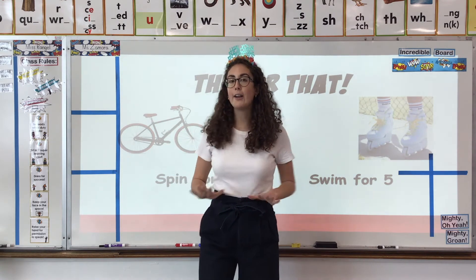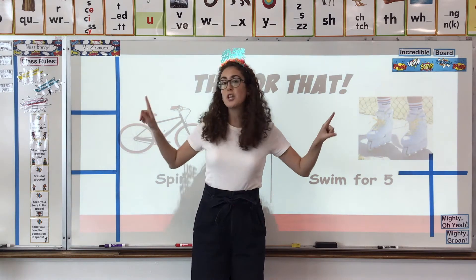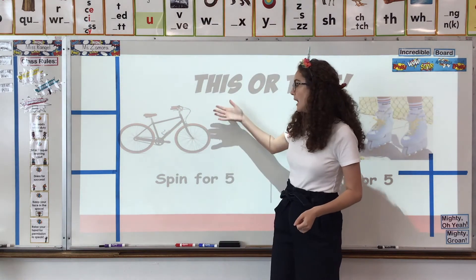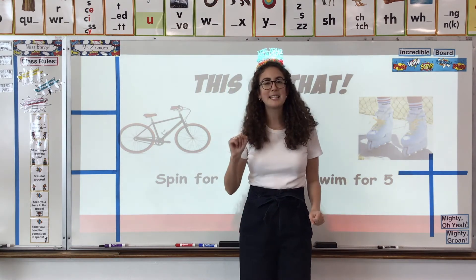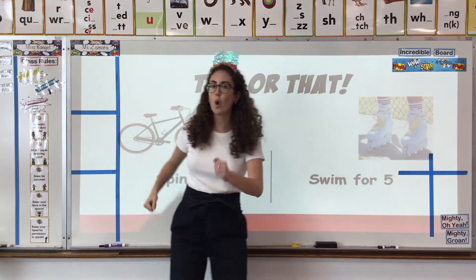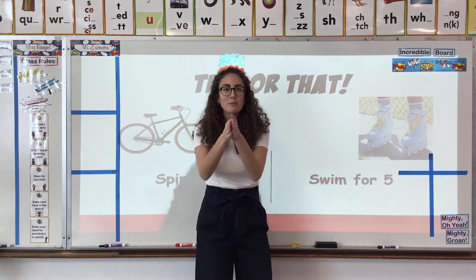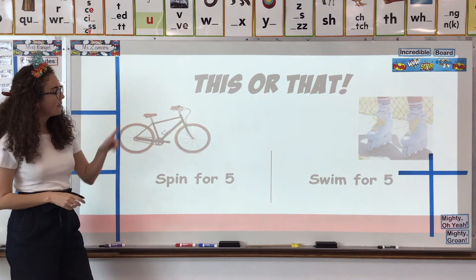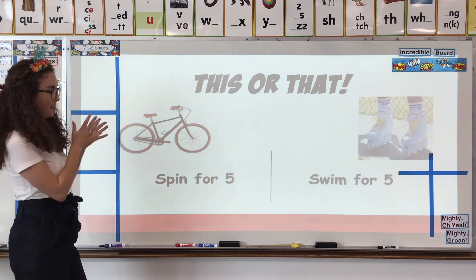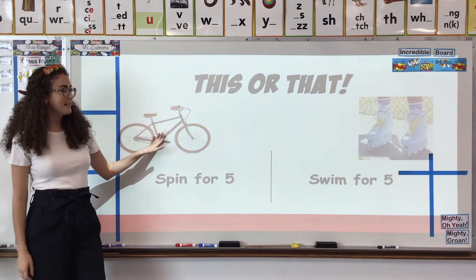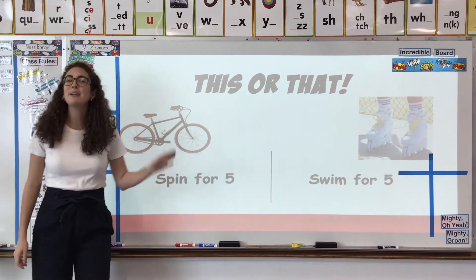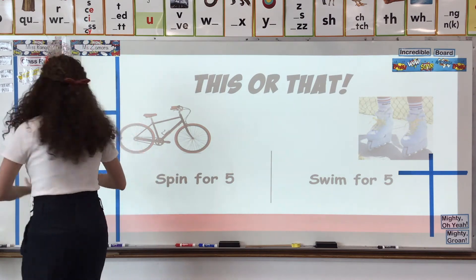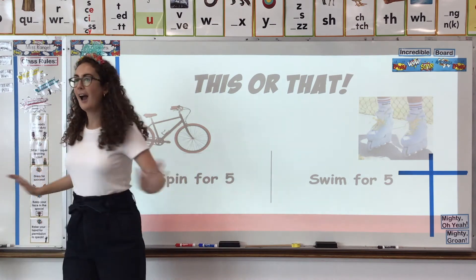We can't get there until we move our bodies and give ourselves a break for all our great work. Are you already standing up? Okay, second grade, you have two options of which of these you would rather ride. Would you rather ride a bicycle? If so, you're gonna spin for five seconds. Or would you rather ride on rollerblades? If so, you're gonna swim for five seconds. I would go for a bicycle since I'm really bad at rollerblading, so I'm gonna spin for five seconds. One, two, three, four, five.